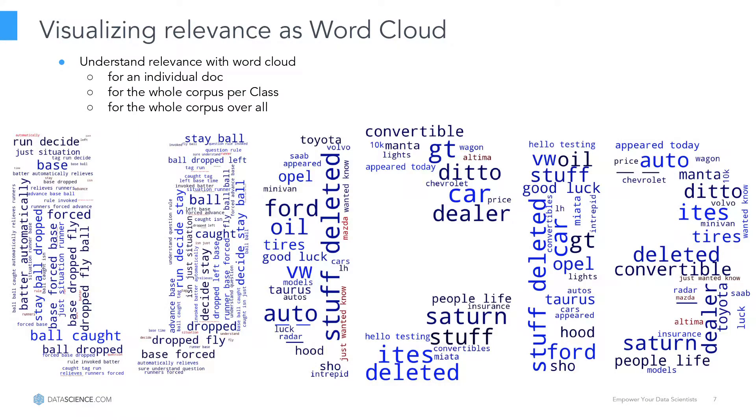We talked about TF-IDF — what else can we do? How about we visualize the same level of interpretation, moving from document to class to overall dataset in a much more interpretable way? Word clouds are pretty famous, and what SCATERS has done is allow a convenient way to create word clouds at all different levels. What I'm showing here: the one on the left is at the document level, the one in the middle is at the class level, and the one on the right is at the overall level.